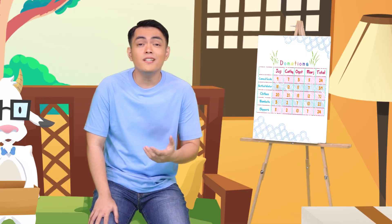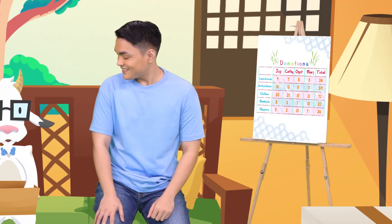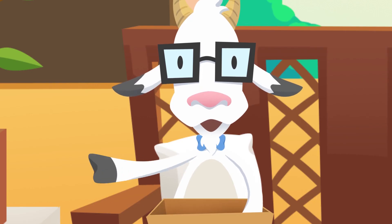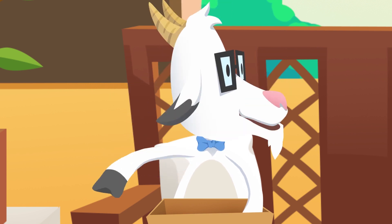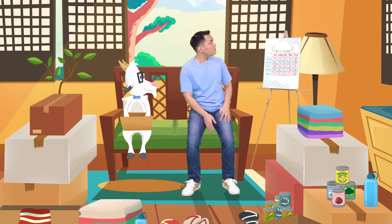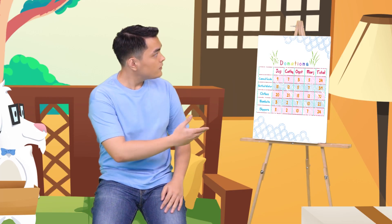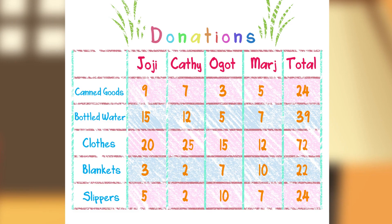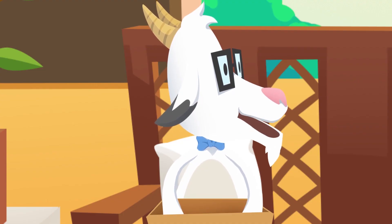Hi there. We have decided to donate to the victims of the typhoon. So Marge, Kathy, Ogot, and I gave what we could give and collected it here. We donated canned goods, blankets. Don't worry, I already put them all in this table. This is good, Joji. This will help us see how many items we donated.